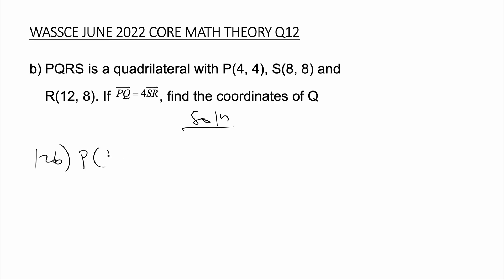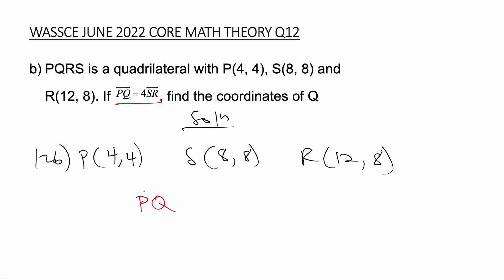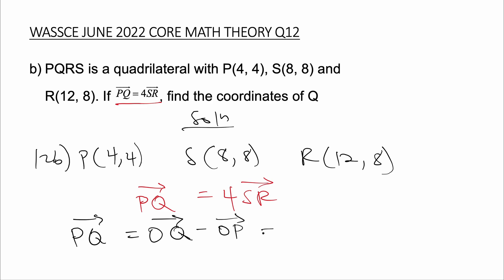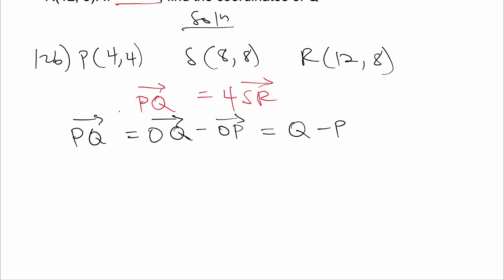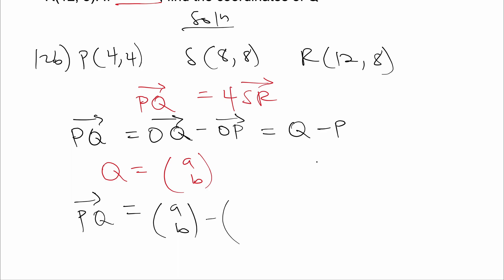We know PQ is equal to 4·SR. First let's find PQ. PQ is equal to the position vector of Q minus the position vector of P, which is the same as Q minus P. Since we don't know Q, let's represent Q as (a, b). So then PQ will be equal to (a, b) minus P, which is (4, 4). This gives us (a minus 4, b minus 4).